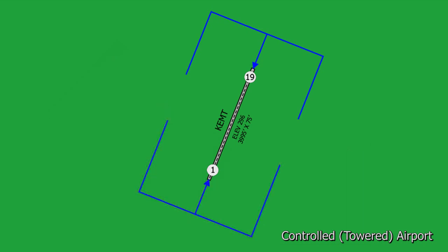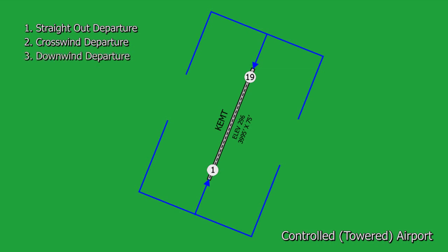For most tower-controlled airports there will be basically three types of departure procedures: a straight out departure, a crosswind departure, and a downwind departure.